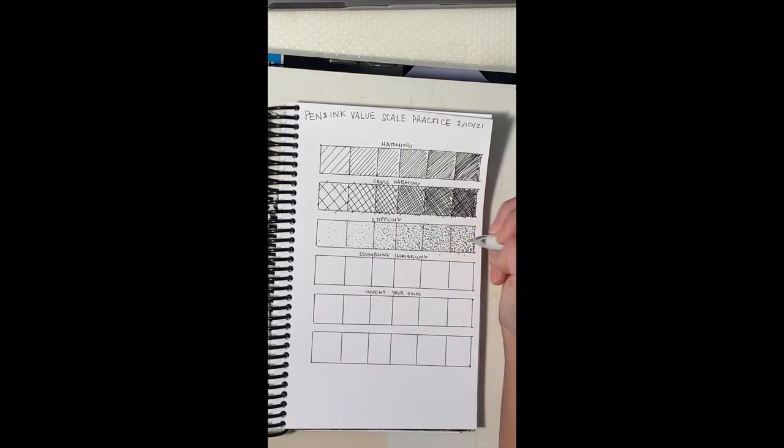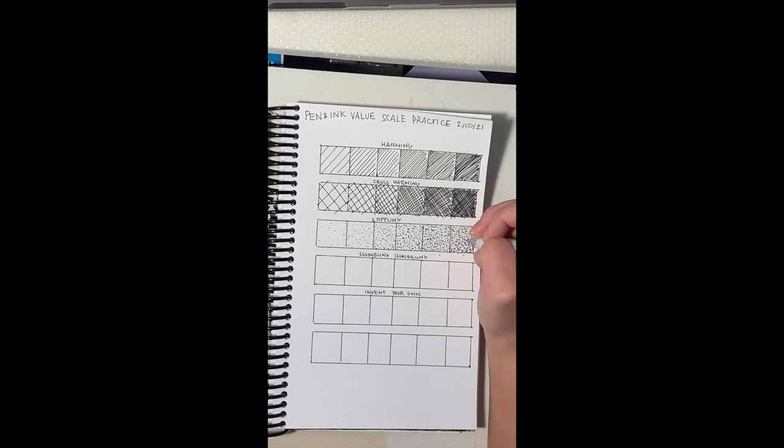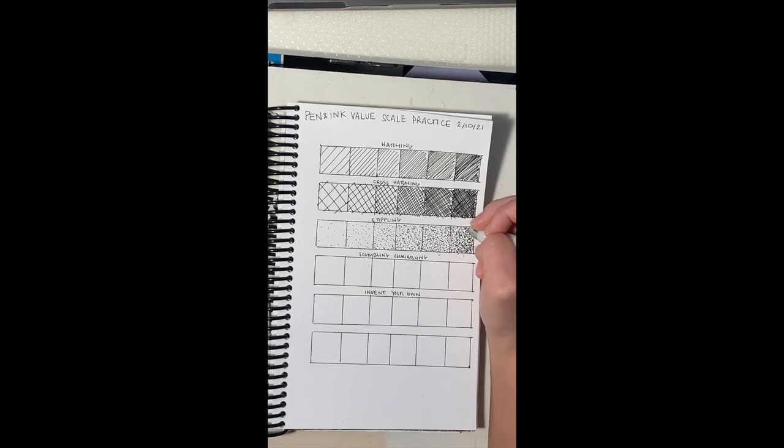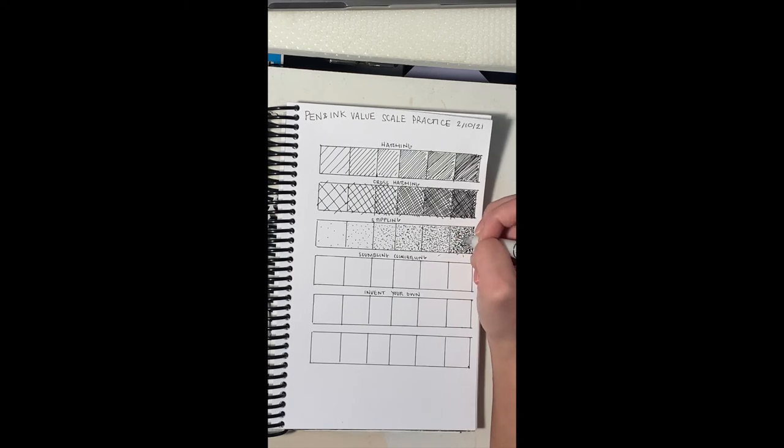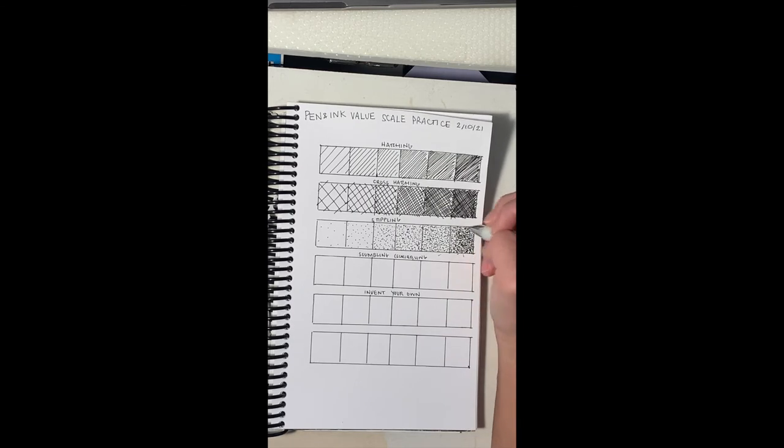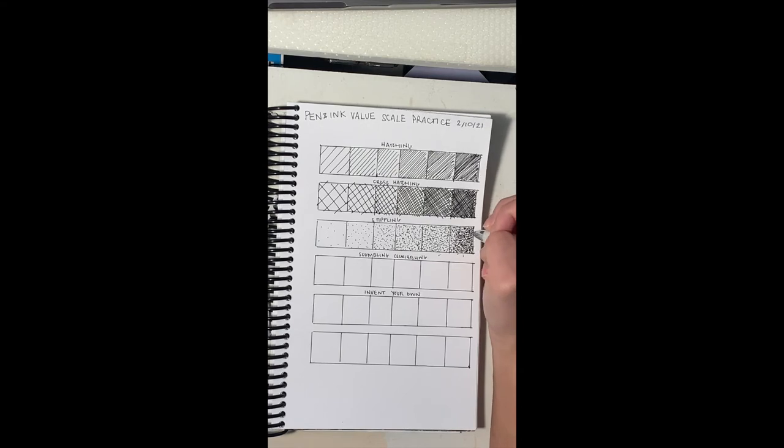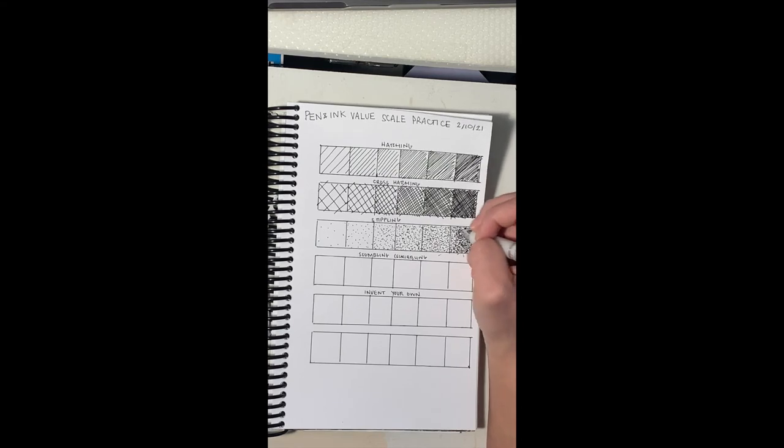But I recommend maybe sitting down and creating these values while you're watching TV so you can really just spend some time making your values. Stippling does take the longest. Real time, I probably spent five minutes just on stippling.